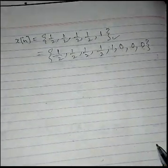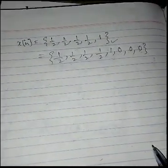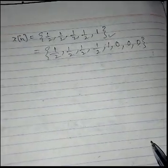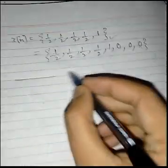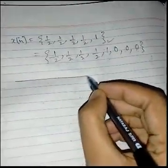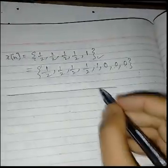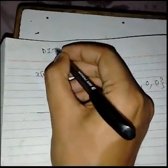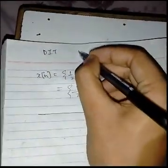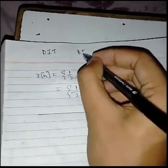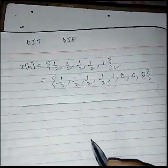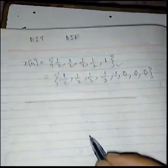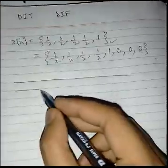The next step is to draw a butterfly diagram — that's basically how you solve Fast Fourier Transforms. There are two ways of doing this: the first is called decimation in time and the second is called decimation in frequency. I'm going to draw the butterfly diagram for decimation in time.